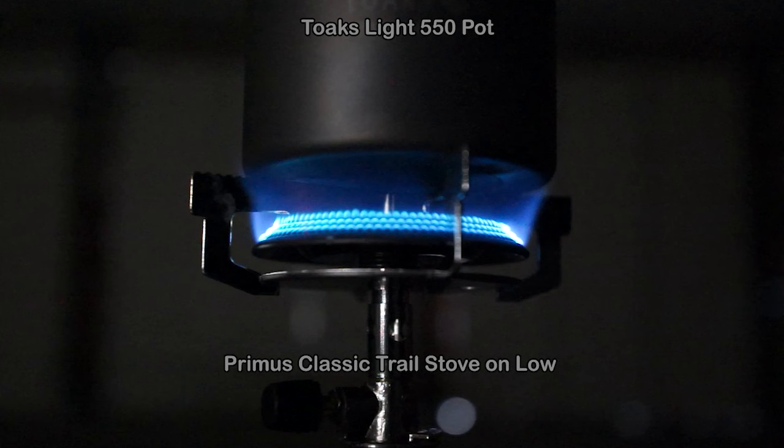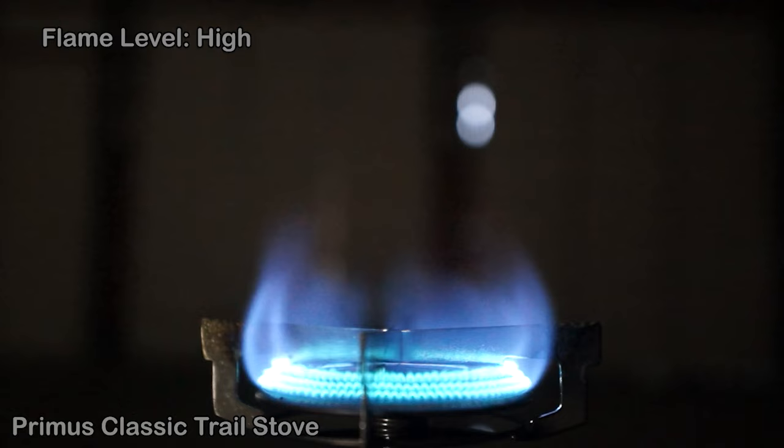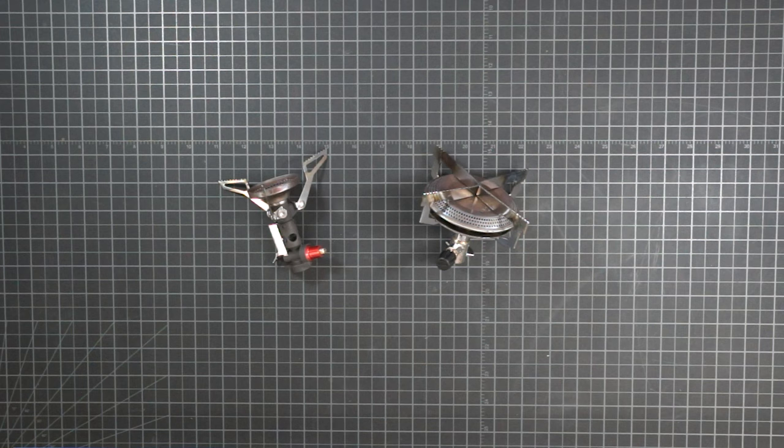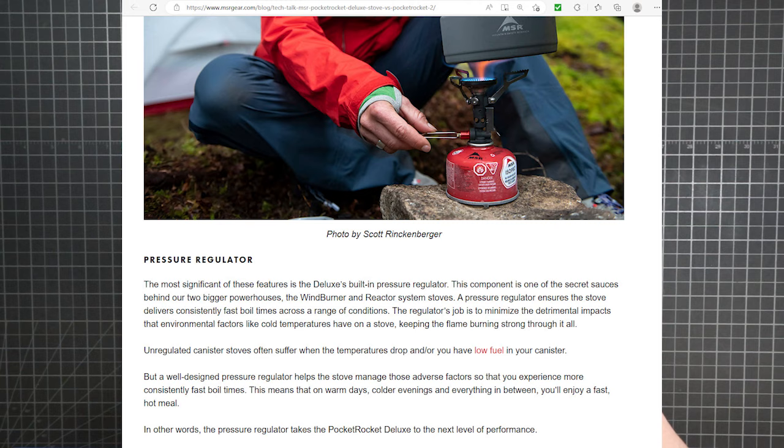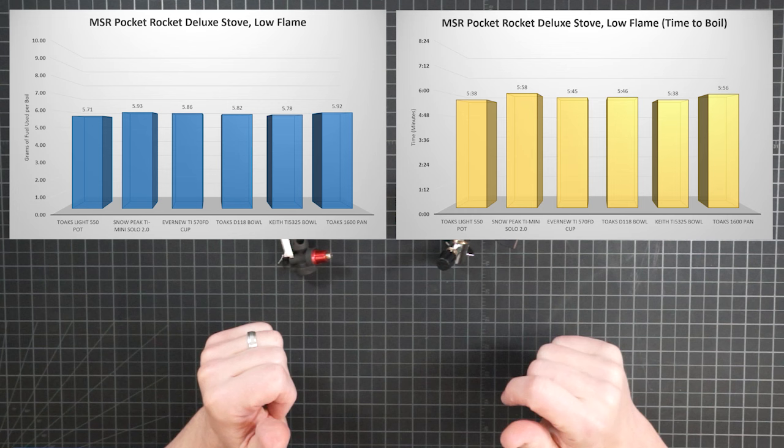And before I forget, here's the flame splash for the Primus on low. And the look and sound of high, medium, and low on the Primus classic trail stove. Now incidentally, the Primus stove has no regulation. The Pocket Rocket Deluxe's valve does have a pressure regulator. So in contrast to the Primus, the MSR's times remain essentially flat, as flat as the fuel consumption numbers, suggesting there's no particular need to correct those for bias.